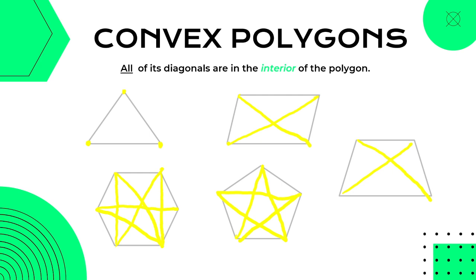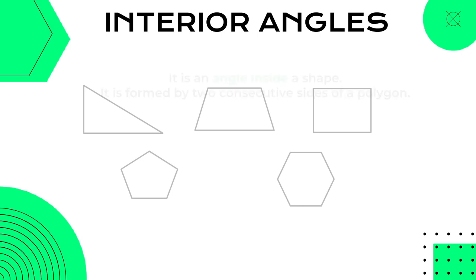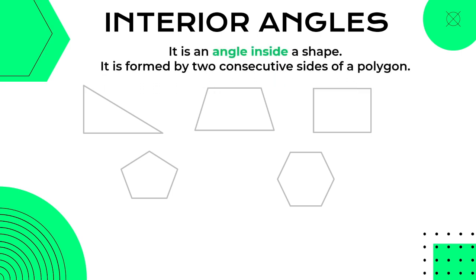So ang focus natin ngayon is about convex polygons at ang mga measure ng kanilang interior and exterior angles. What do we mean by interior angles? It is an angle inside a shape — from the word interior, that means nasa loob ito ng shape. It is formed by two consecutive sides of a polygon. Kapag pinagsama natin yung dalawang sides ng polygon, makakabuo tayo ng angle, at ang mga ito ang tinatawag nating interior angles.